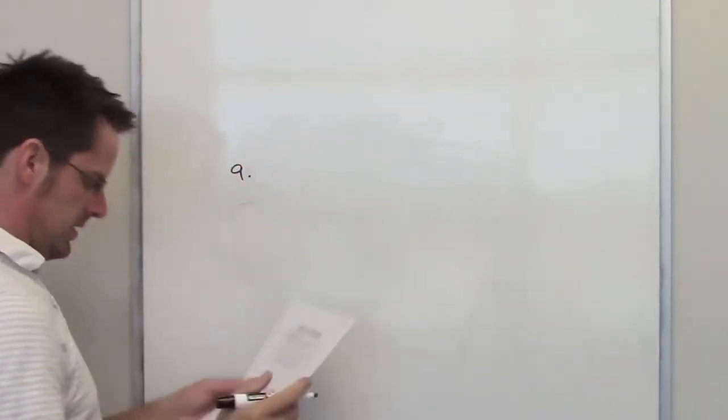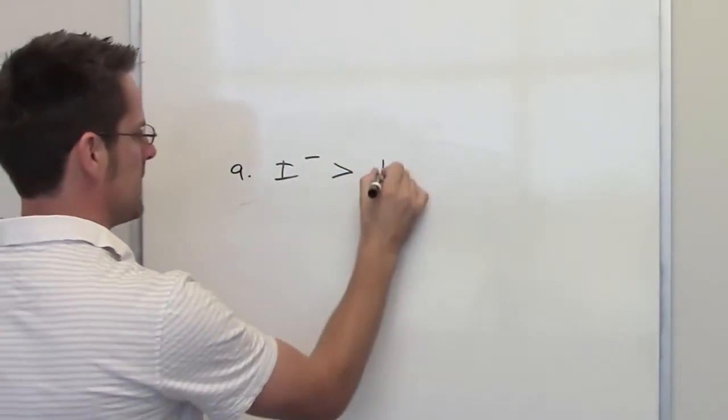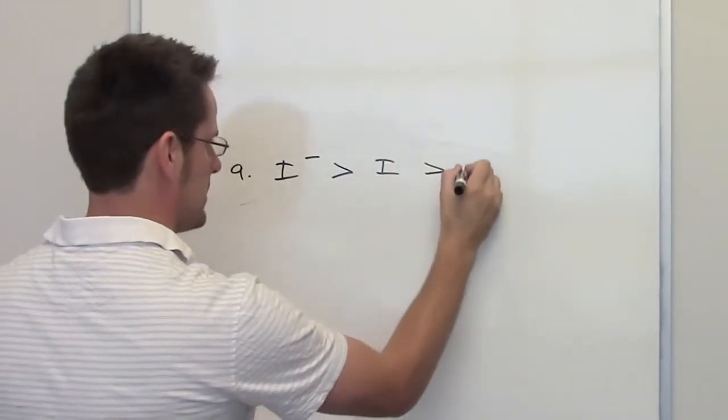In this second problem, we're asked to explain the following trends in size. We've got iodide being larger in size than iodine, being larger in size than I+.